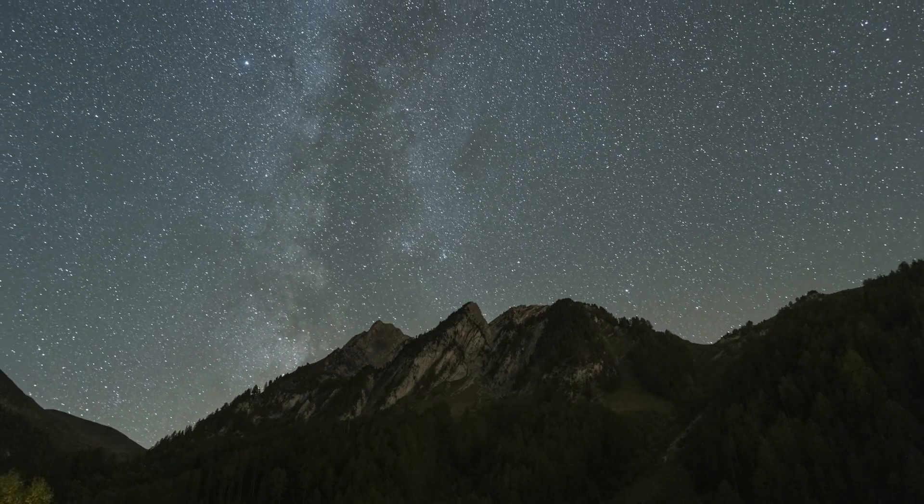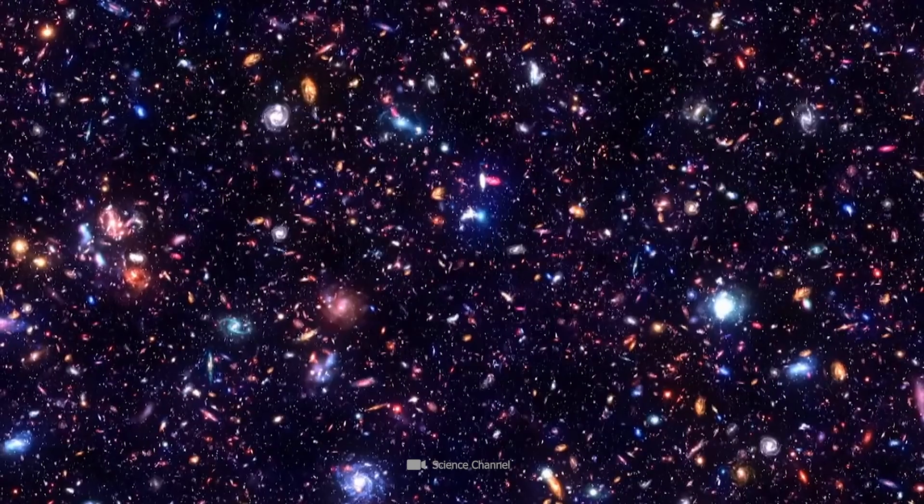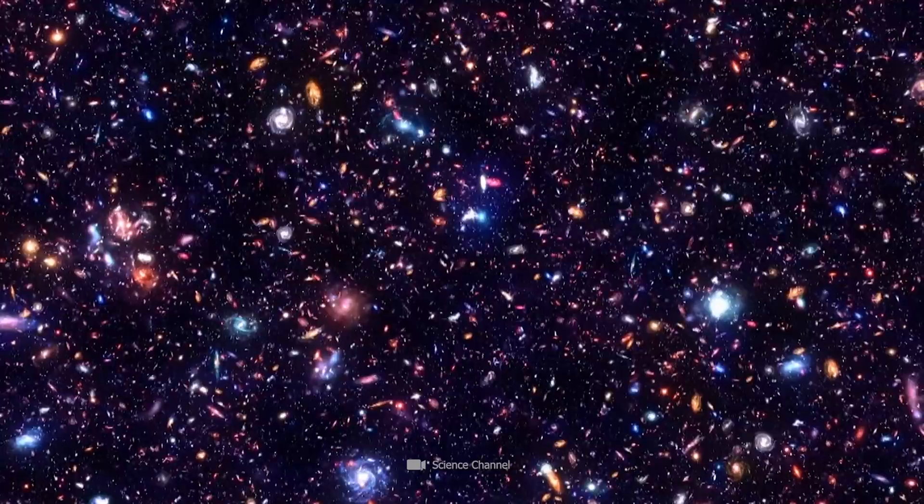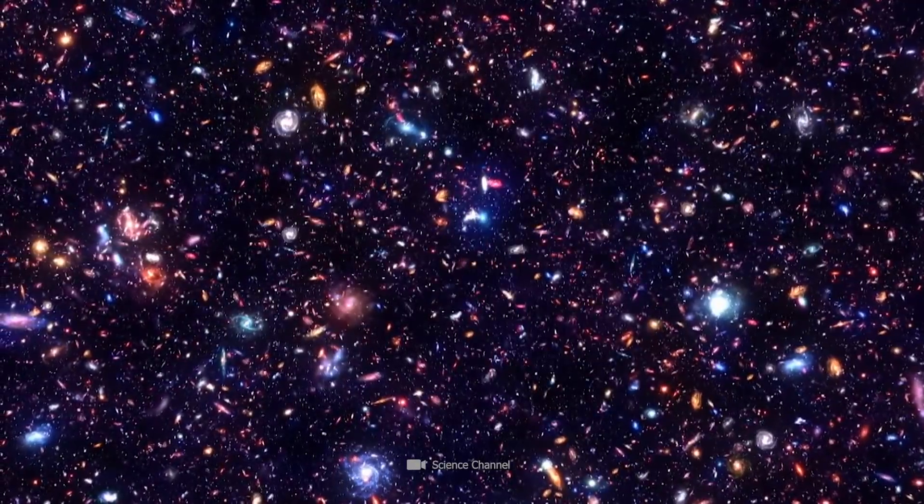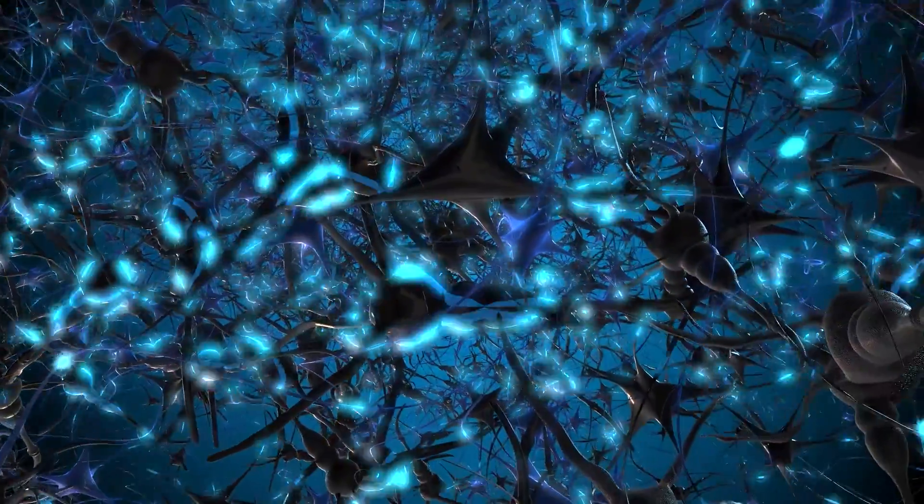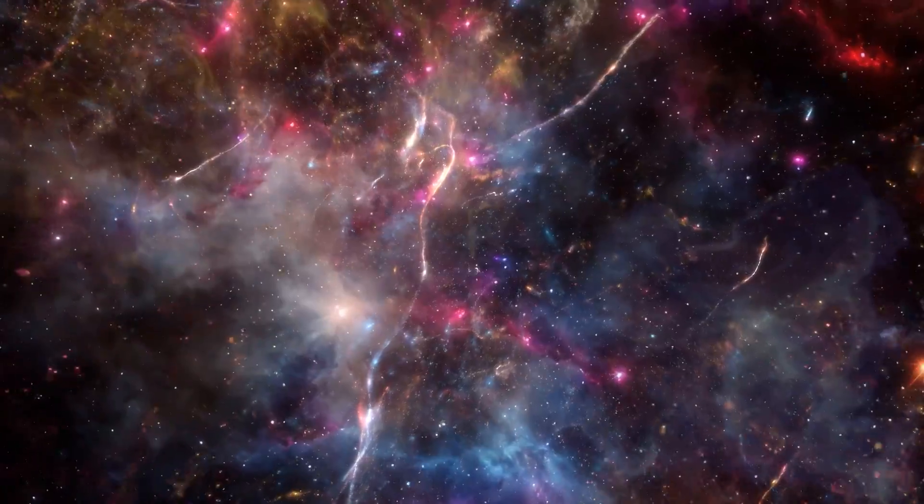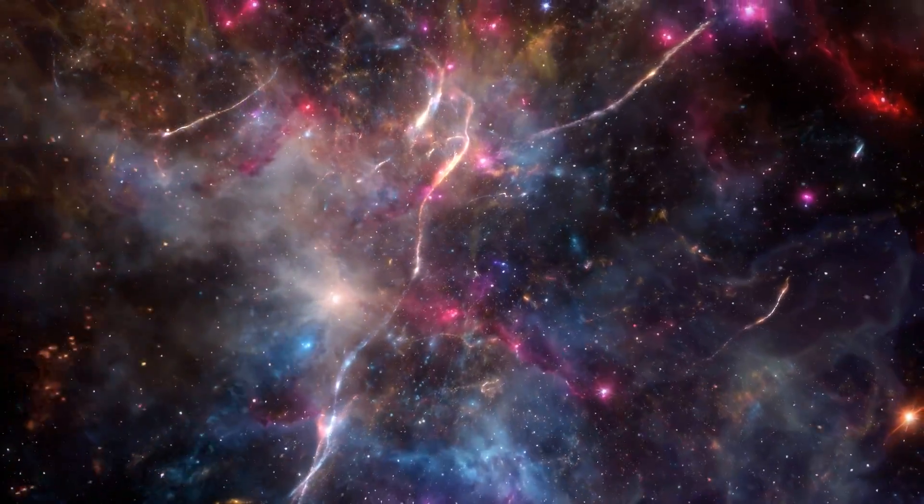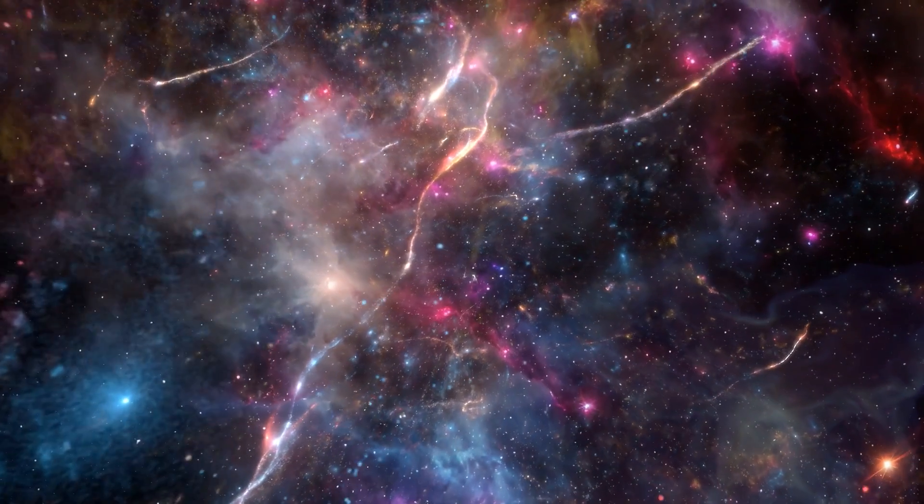These similarities are no coincidence. They take us to the limits of physics and bring us into contact with completely new dimensions. Vazza and Folletti state in their paper that the human brain contains approximately 69 billion neurons, while the observable universe contains an estimated 100 billion galaxies.